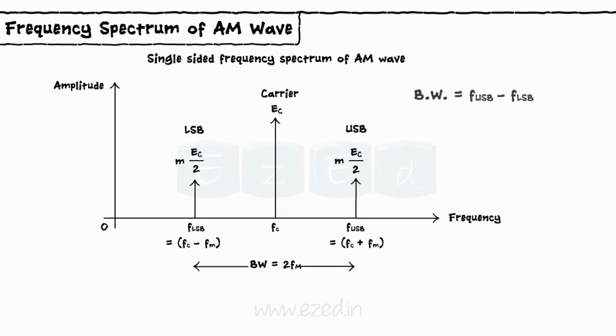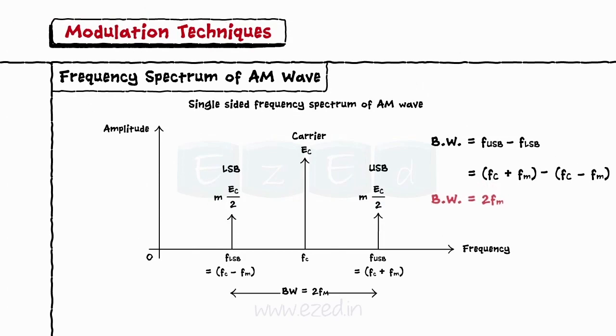The bandwidth of the AM signal is obtained by the subtraction of the lowest frequency component from the highest frequency component. It comes out to be equal to 2FM.